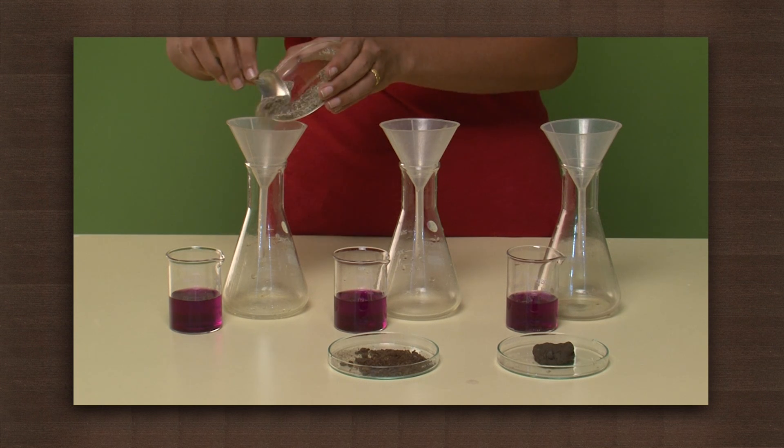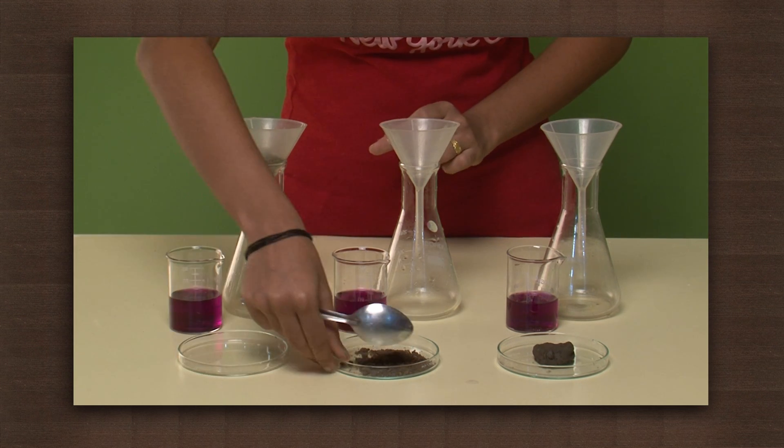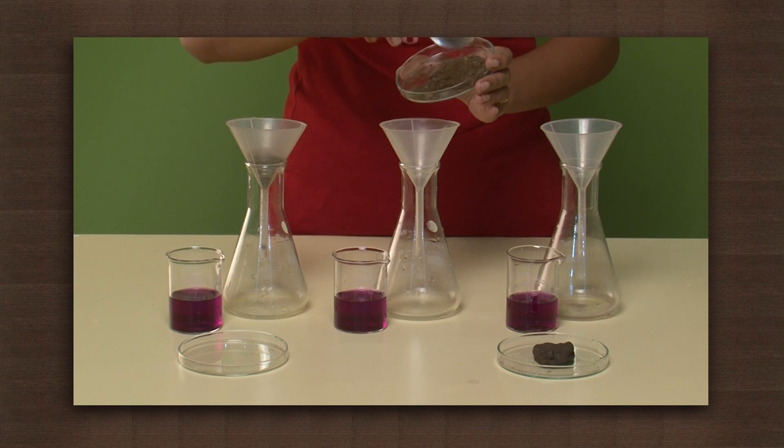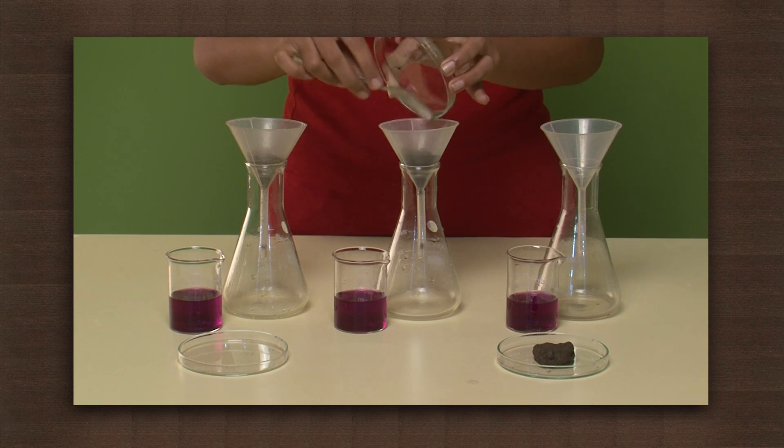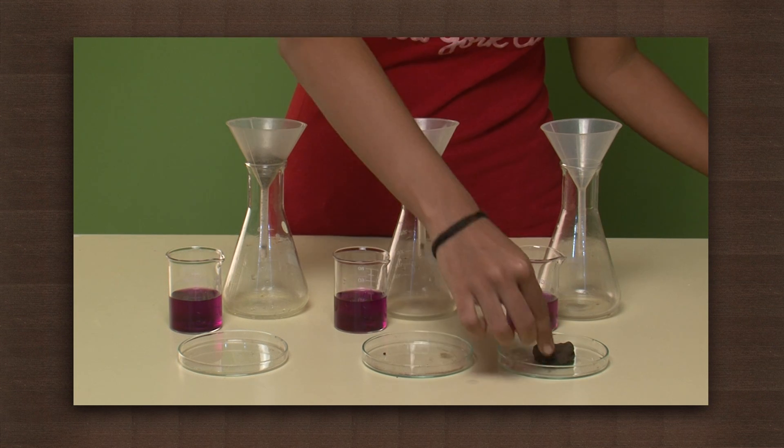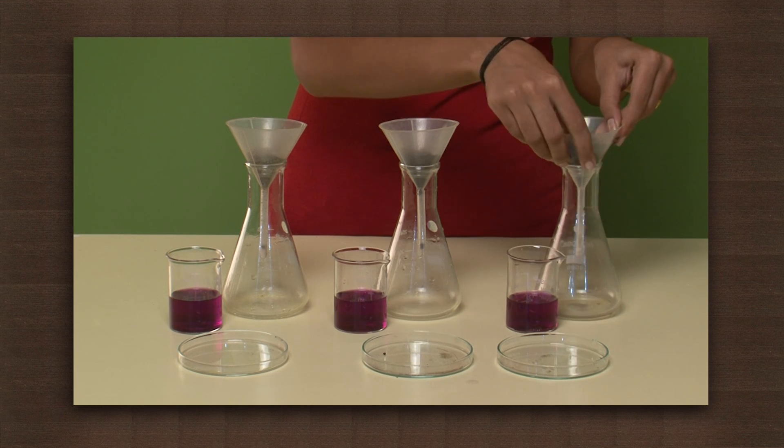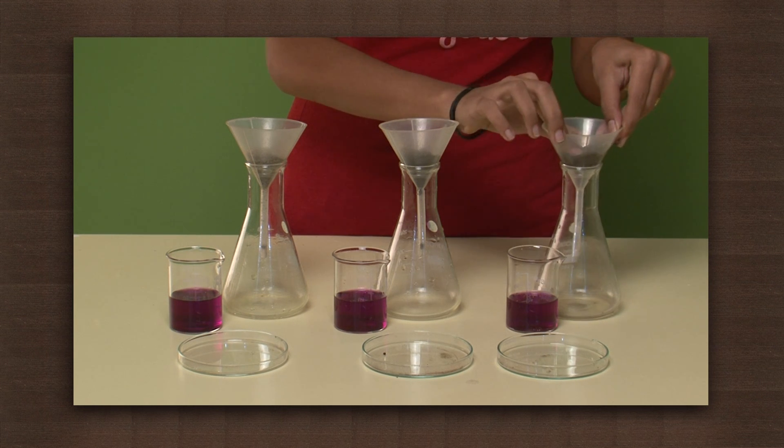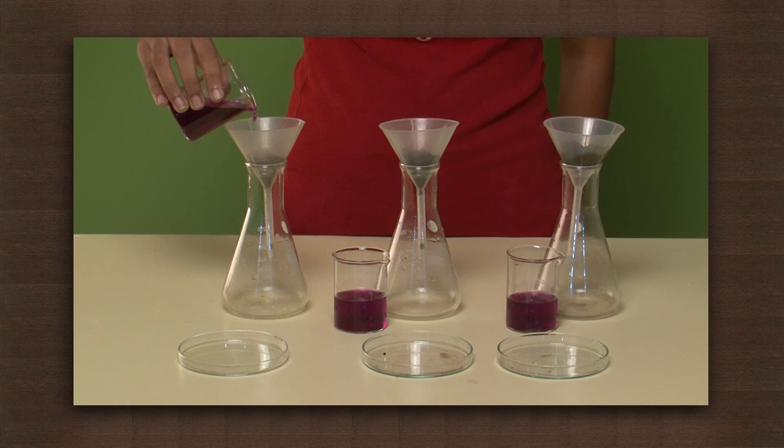Put the sand in the first funnel, loamy soil in the second, and clay in the third. Now, pour the coloured water slowly over each type of soil.